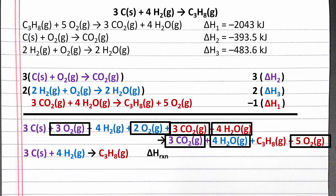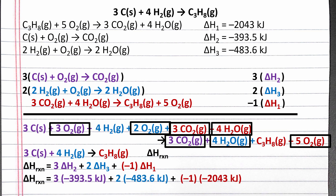Since we could add together these three reaction steps to get the overall reaction, according to Hess's law, the enthalpy change for the overall reaction is the sum of the enthalpy changes for the three steps. We can plug in our numbers for the enthalpy change of each step. Completing the calculation, the enthalpy change of our overall reaction should be negative 104.7 kilojoules.